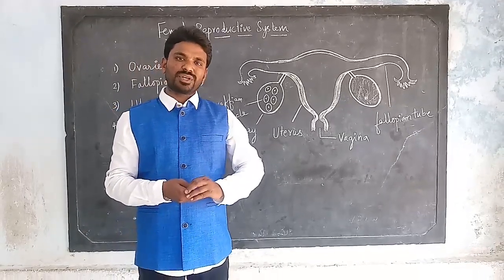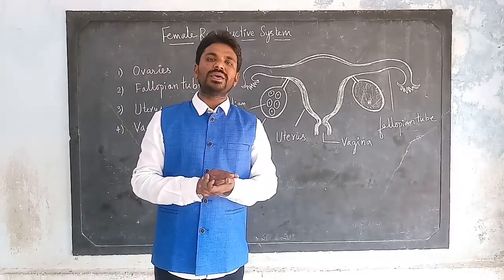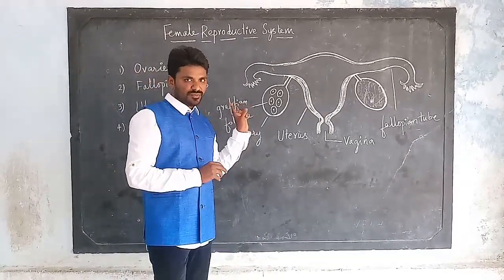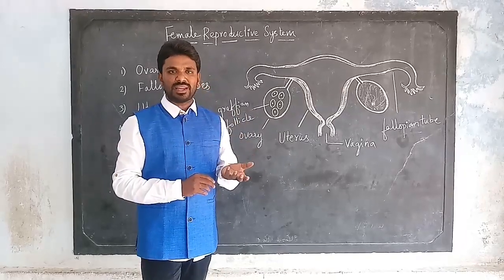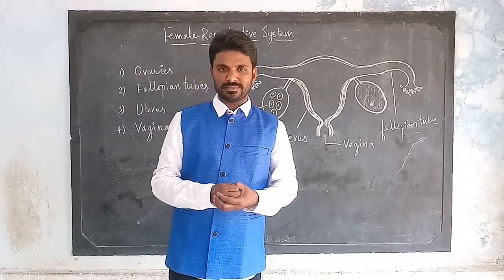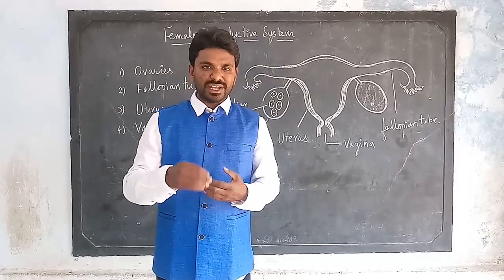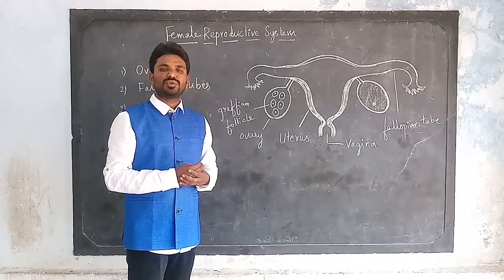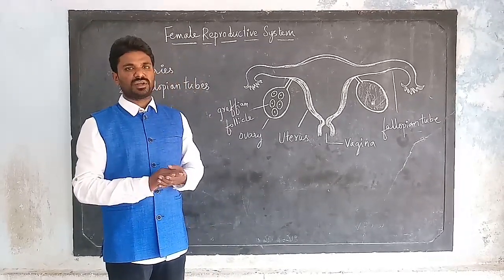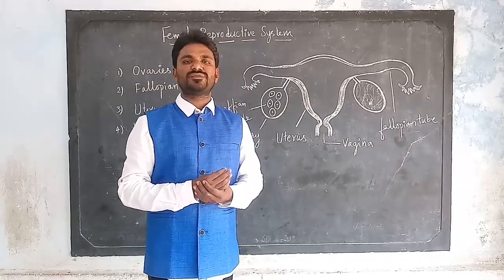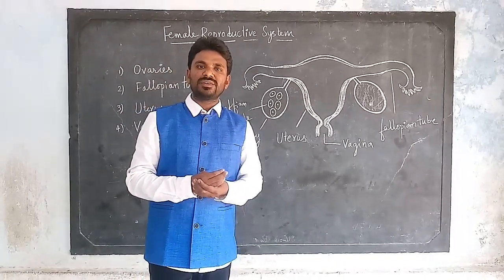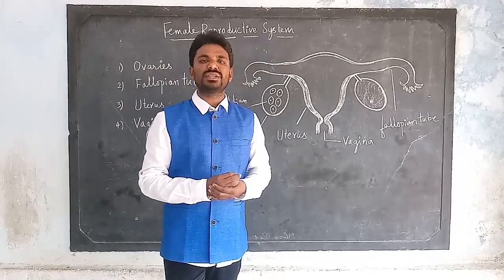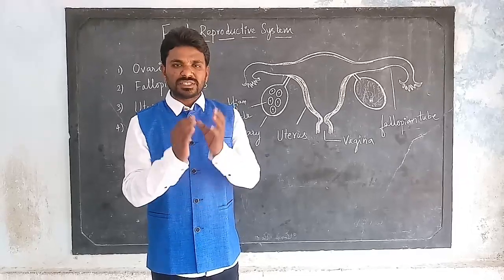Ovaries are involved in the production of female gametes and female sex hormones like estrogen and progesterone. Estrogen hormone helps in the formation of secondary sexual characters in girls at the age of adolescence. Progesterone hormone helps in implantation of the embryo, meaning the fixing of the embryo in the wall of the uterus.